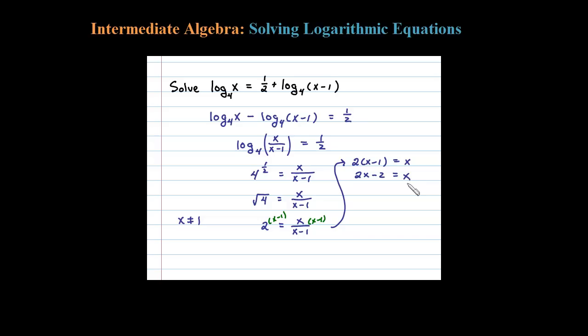So let's go ahead and add 2, and at the same time subtract x. Hopefully it's okay to do those two steps in one, so 2x minus x is x equals 2.